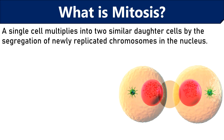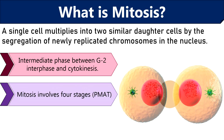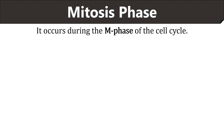Now talking about the important features of mitosis: it occurs in the M phase of the cell cycle, or it is an intermediate phase between the G2 interphase and cytokinesis. It basically involves four stages — prophase, metaphase, anaphase, and telophase. Mitosis only occurs in somatic cells that do not participate in the production of gametes.